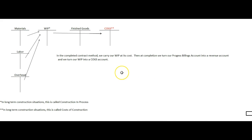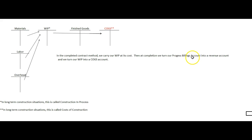Under the completed contract method, as we build the freeway or the bridge, we carry work in process only at our cost. Then at completion we take those costs and move them into cost of goods sold. The revenue account comes from a contra asset account called progress billings — as we bill our customer, we debit accounts receivable and credit progress billings. Then at the end when everything's done, we turn that progress billings account into a revenue account and work in process turns into cost of goods sold. So in the meantime we've booked absolutely no gross profit from this long-term project.